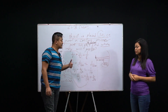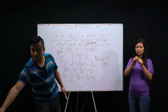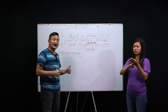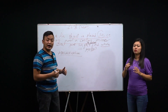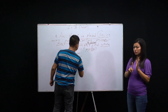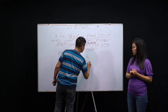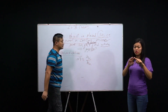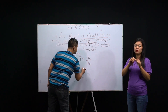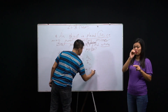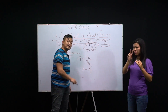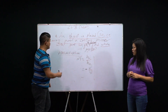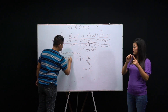Next, let's discuss magnification. Magnification is the height of the image divided by the height of the object. The formula for a spherical mirror is m = -v/u, where v is image distance and u is object distance.